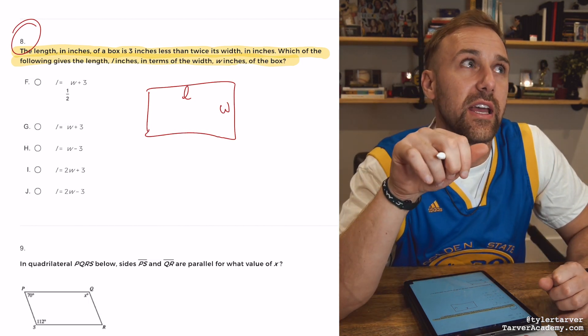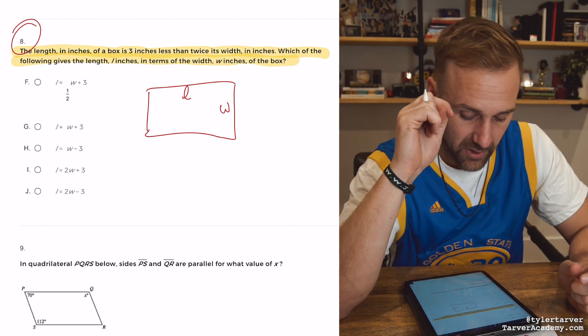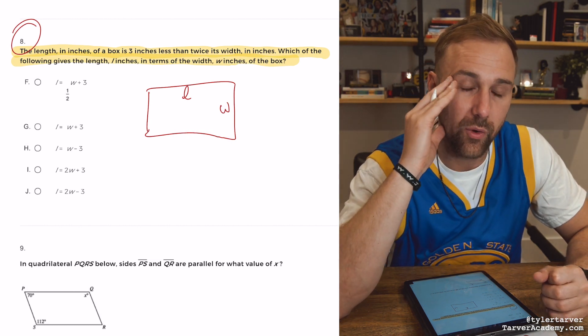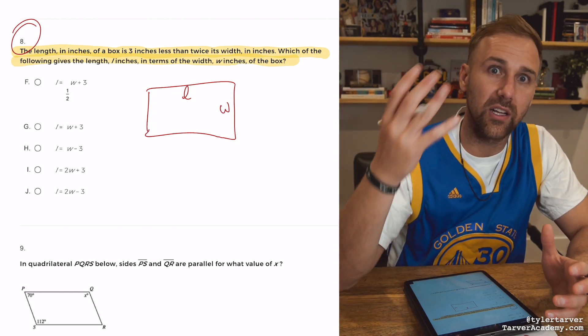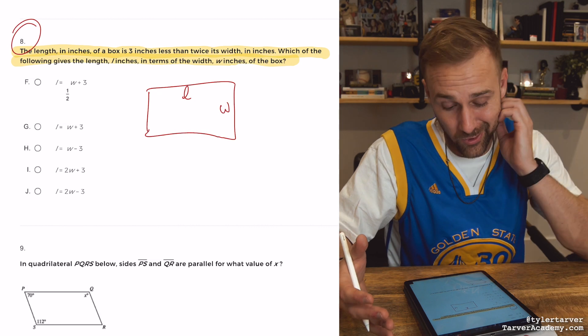What do we use in math when we don't know something? We use a variable, correct? We use a letter of the alphabet to represent something we don't know.